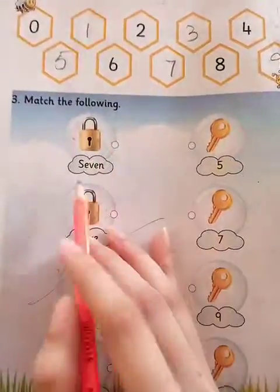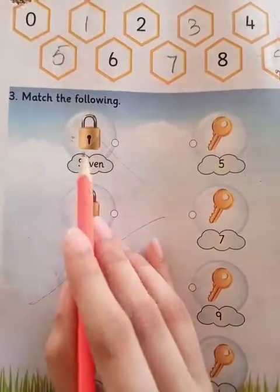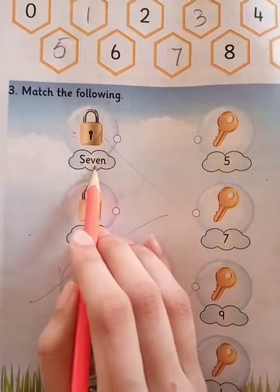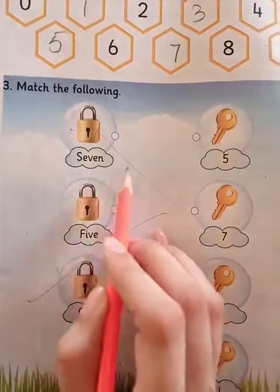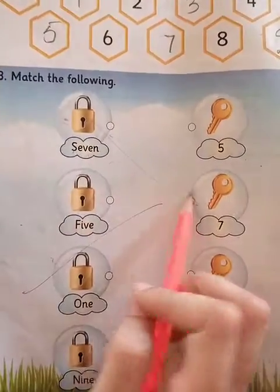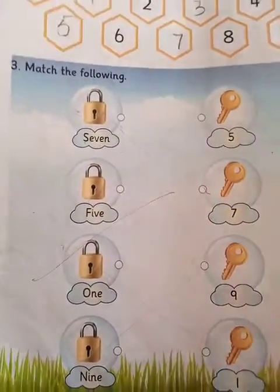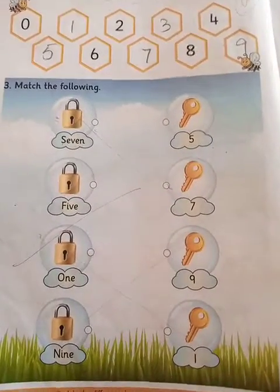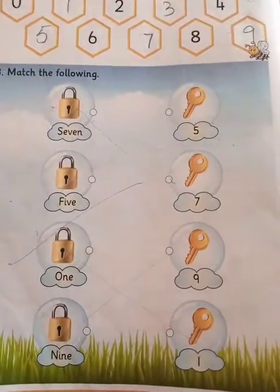Now match the column. What is this? Seven. S-E-V-E-N, seven. We have to join the seven numbers. Okay? This is your homework — do page number one and two in your maths book.